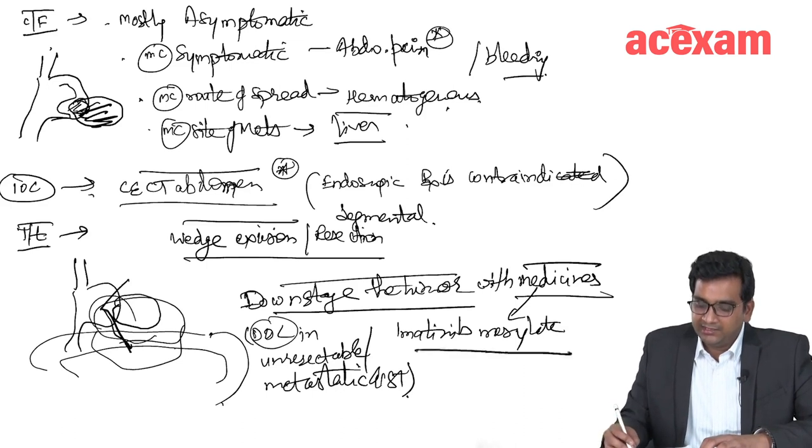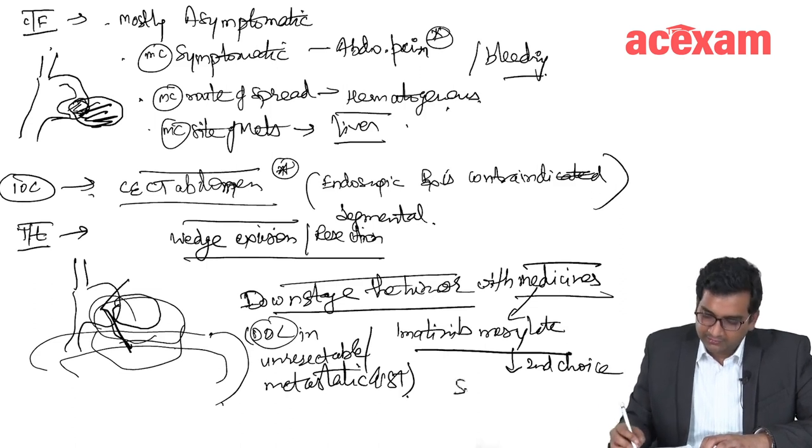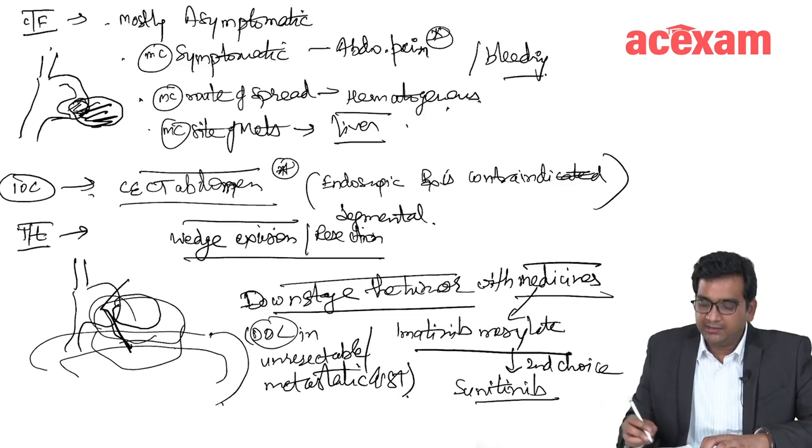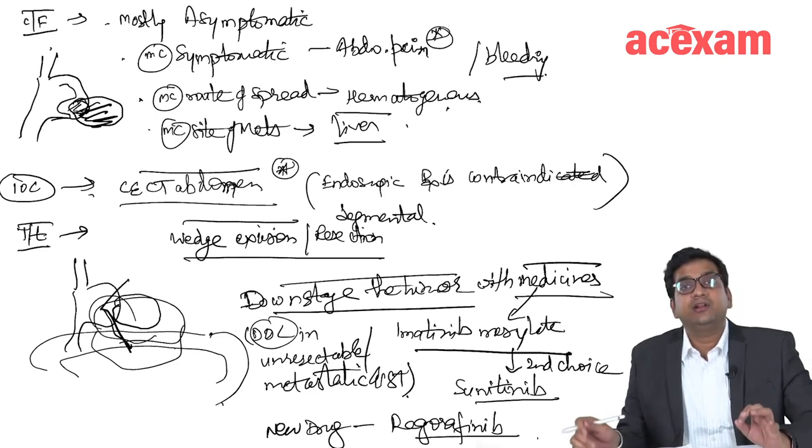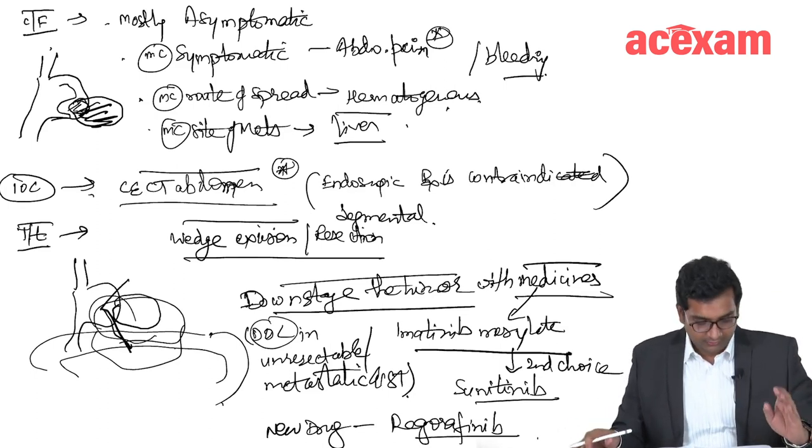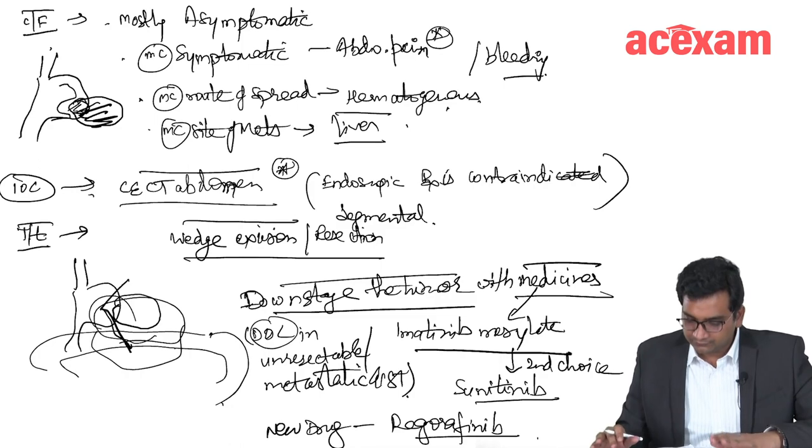What is the second choice? Second choice is sunitinib. A new drug is regorafenib. The new drug is regorafenib. This is regarding GIST.